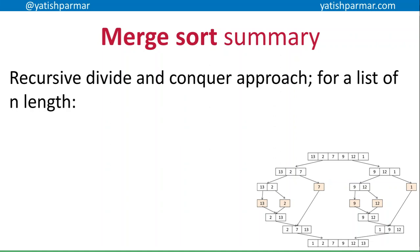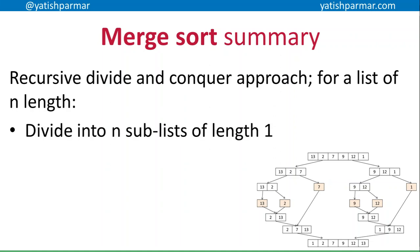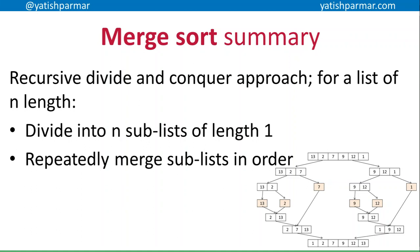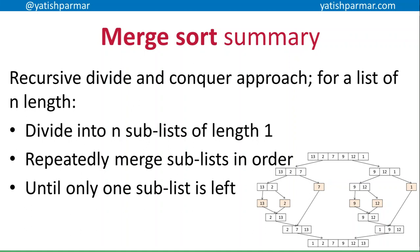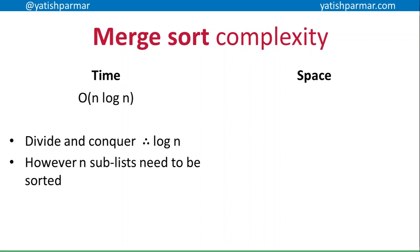With merge sort, remember this is a divide and conquer algorithm where you take a list of n items and split it into sub-lists until you end up with sub-lists of length one. A sub-list of length one is already in order, so you start merging them back together in the required order until you end up with one fully sorted list. Because it's a divide and conquer algorithm, we know it's going to be O(log n) complexity. However, since we have n sub-lists that need to be sorted, it becomes O(n log n). In terms of space requirements, it's O(n) because we have n sub-lists of size one.